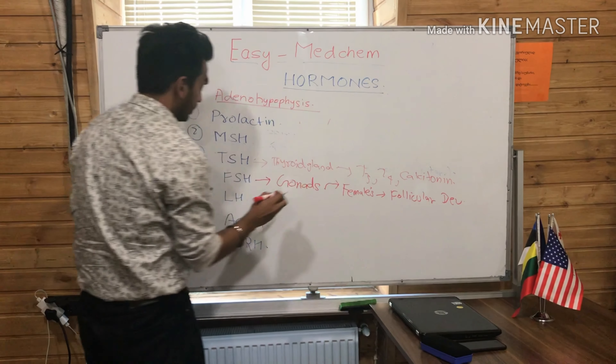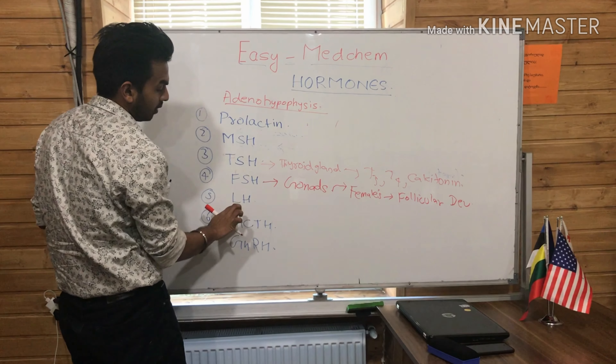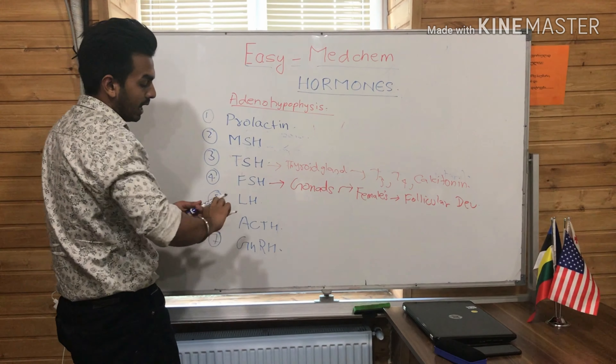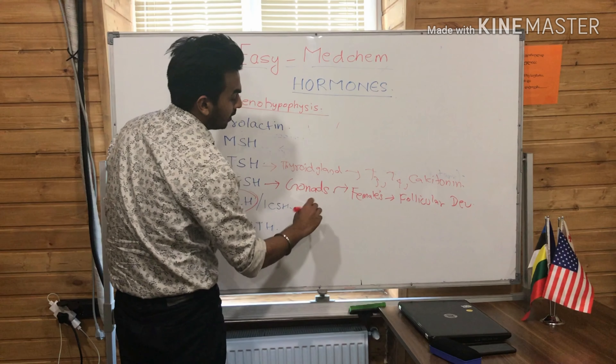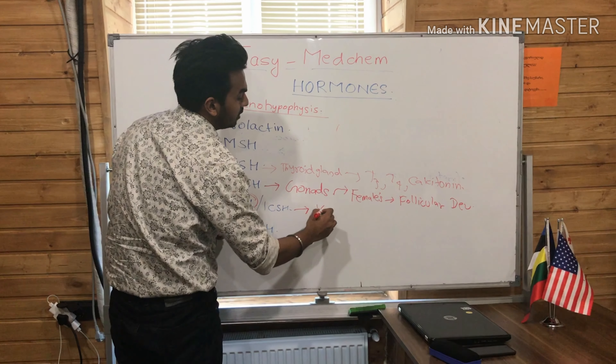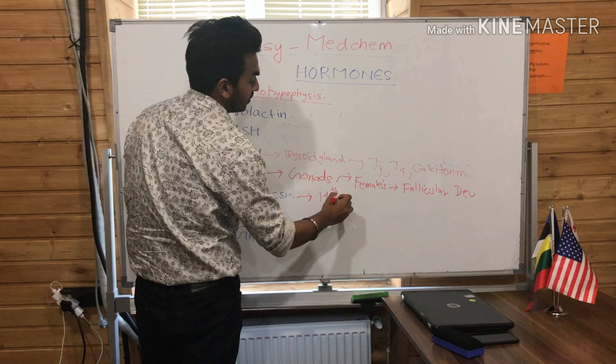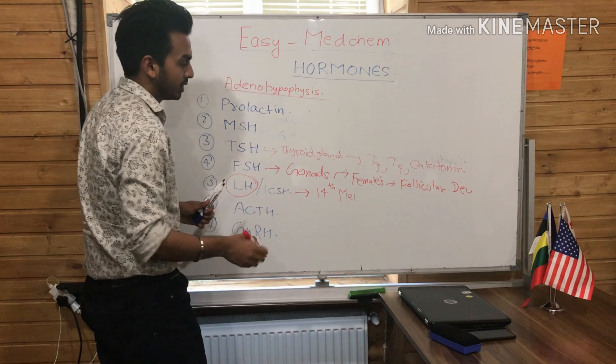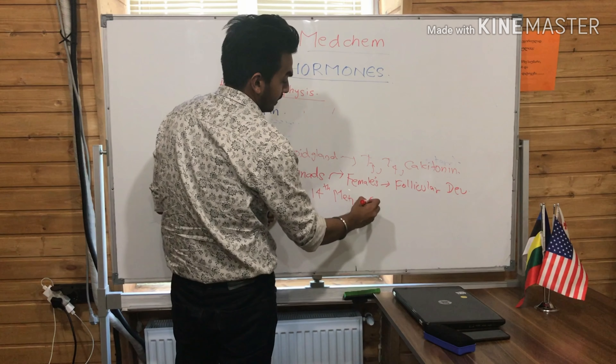This gland will secrete T3, T4, or calcitonin. The FSH, or Follicular Stimulating Hormone, is the reproductive hormone — it will stimulate the gonads. In the case of the female, this FSH is responsible for follicular development.